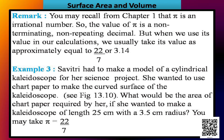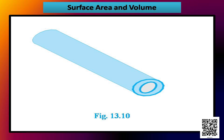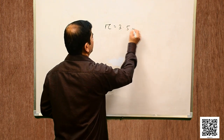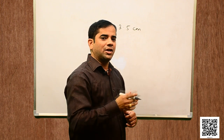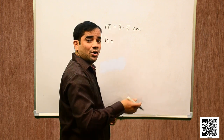Let us now discuss example 3. Sabitri had to make a model of a cylindrical kaleidoscope for her science project and wanted to use chart paper to make the curved surface. What would be the area of chart paper required if the kaleidoscope has length 25 cm and radius 3.5 cm? (Take π = 22/7.) Given: r = 3.5 cm, h = 25 cm.